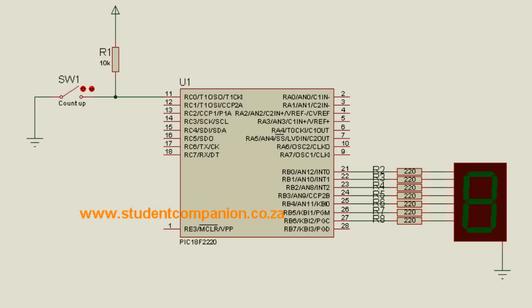Let us create a simple digital counter that counts from zero to nine when switch one is closed. When switch one is opened, the counter stops and displays the last digit. When closed again, the counter resumes from the previous count.